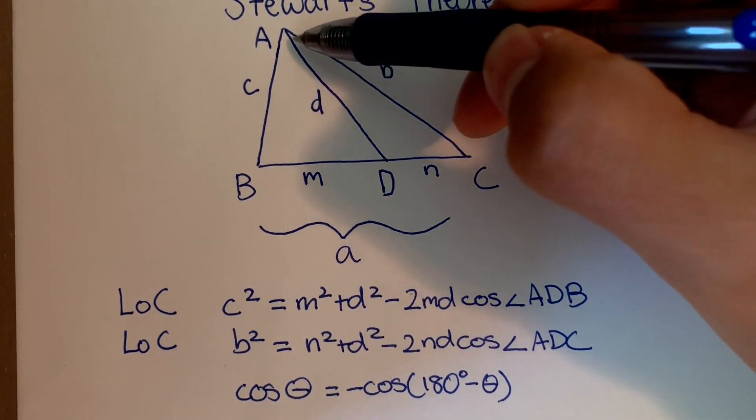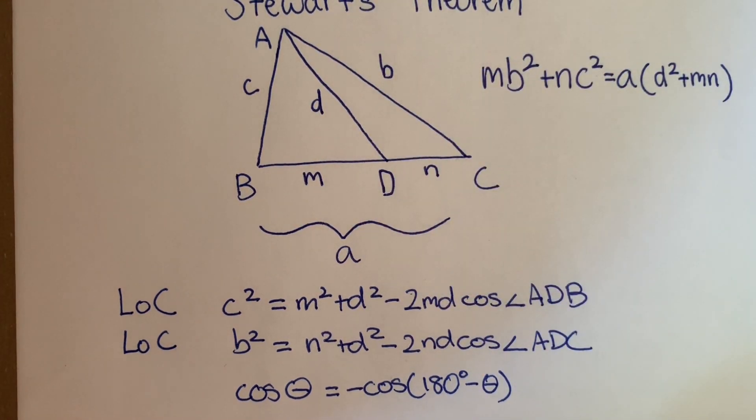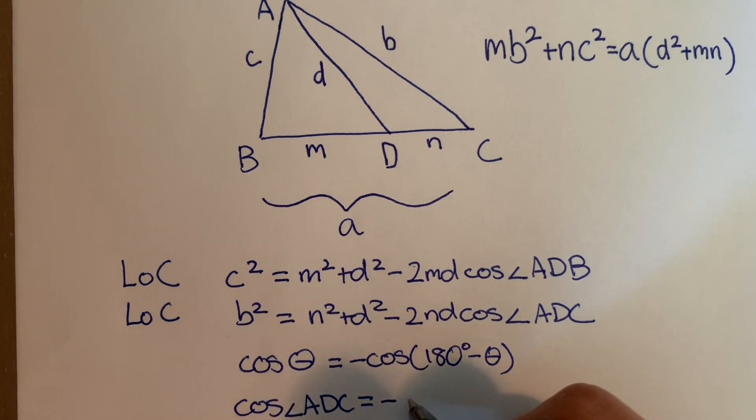So in our diagram, we have angle ADB and angle ADC. They're supplementary. So that tells us that cosine of angle ADC equals negative cosine angle ADB.